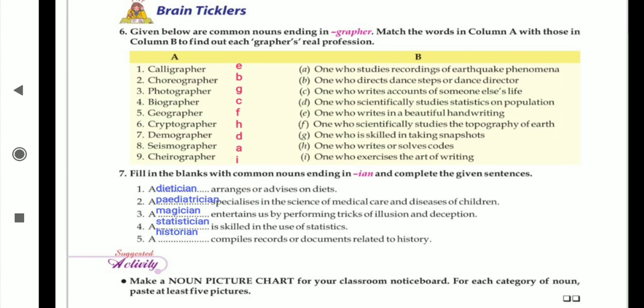Now next: Fill in the blanks with common nouns ending with I-A-N. Previously it has ended with G-R-A-P-H-E-R, now this will end with I-A-N, and complete the given sentences. A blank arranges or advises on diets. Who advises on the diets? Dietitian.